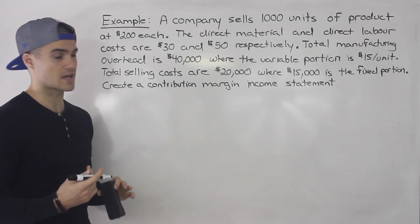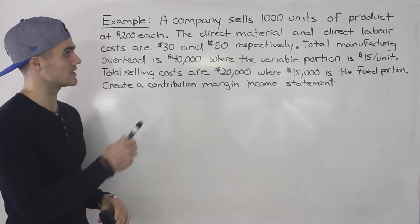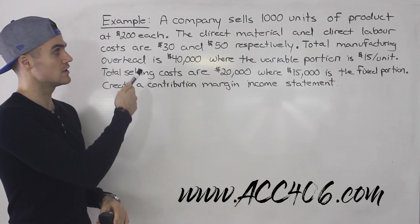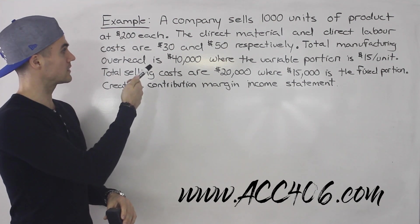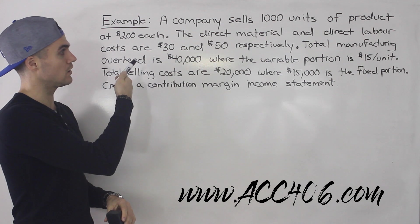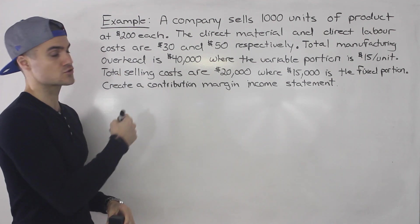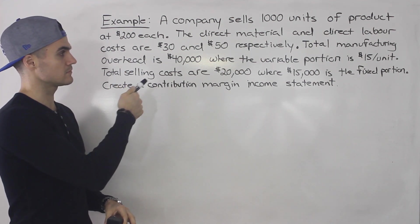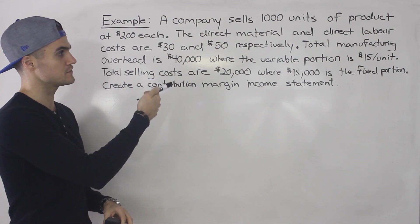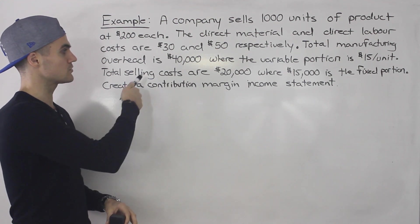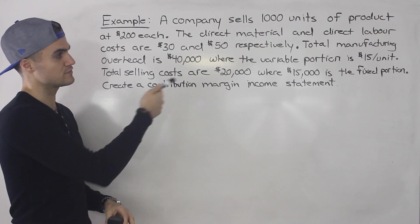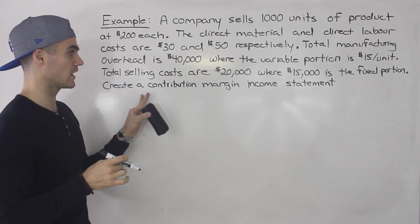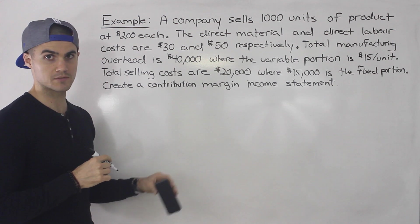To finish off this video, let's do an example. A company sells 1,000 units of product at $200 each. The direct material and direct labor costs are $30 and $50 respectively. Total manufacturing overhead is $40,000 where the variable portion is $15 per unit. Total selling costs are $20,000 where $15,000 is the fixed portion. Create a contribution margin income statement.